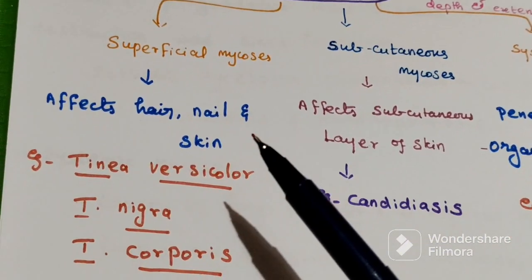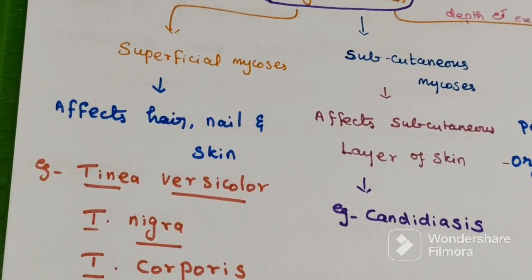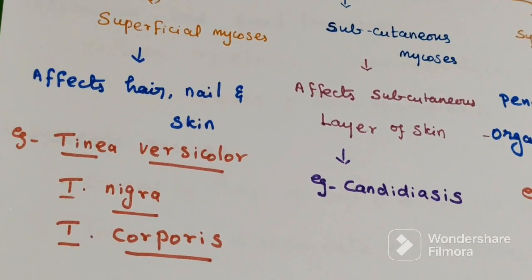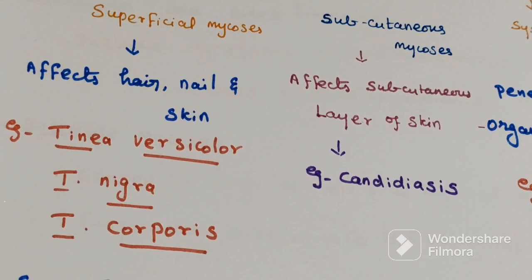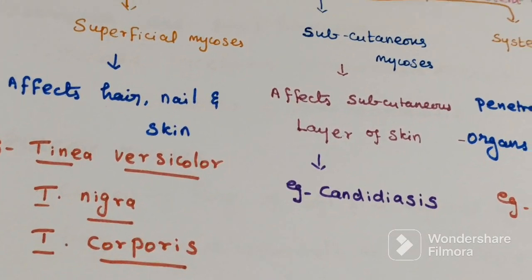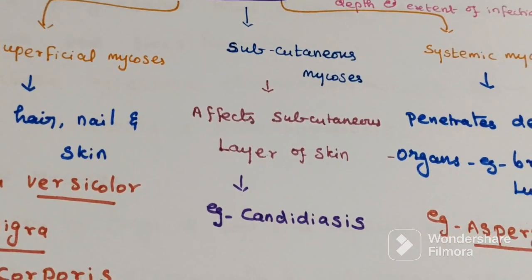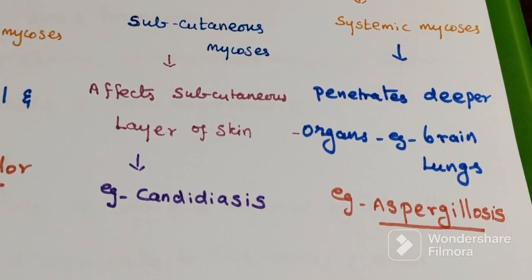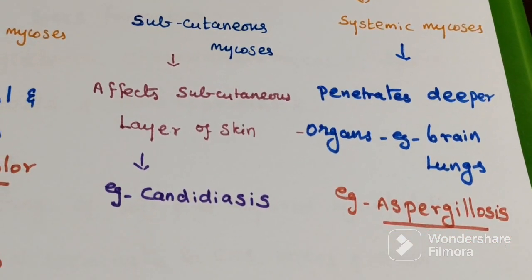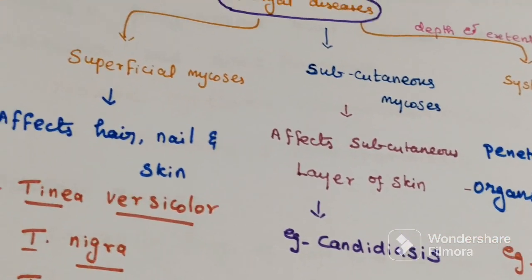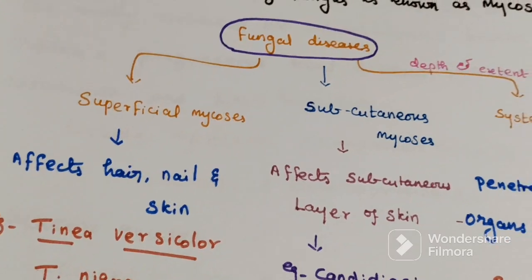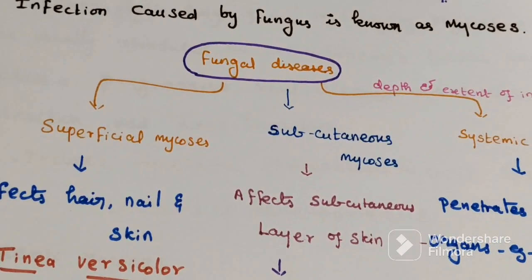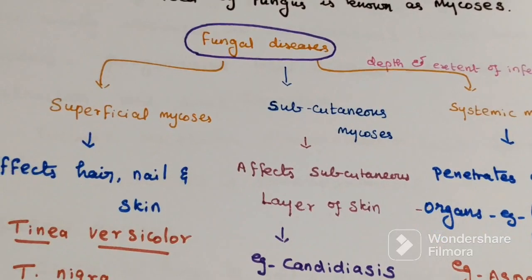Superficial mycosis examples include tinea versicolor, tinea nigra, and tinea corporis. Subcutaneous example: candidiasis. Systemic example: aspergillosis. These are the three types of fungal infection occurring in the human body.